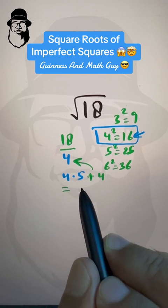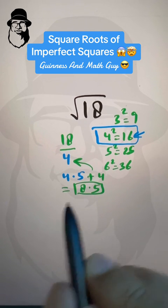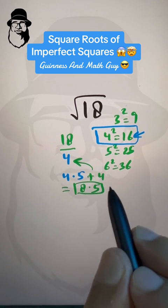It becomes 8.5. The last step is we divide this number by 2.